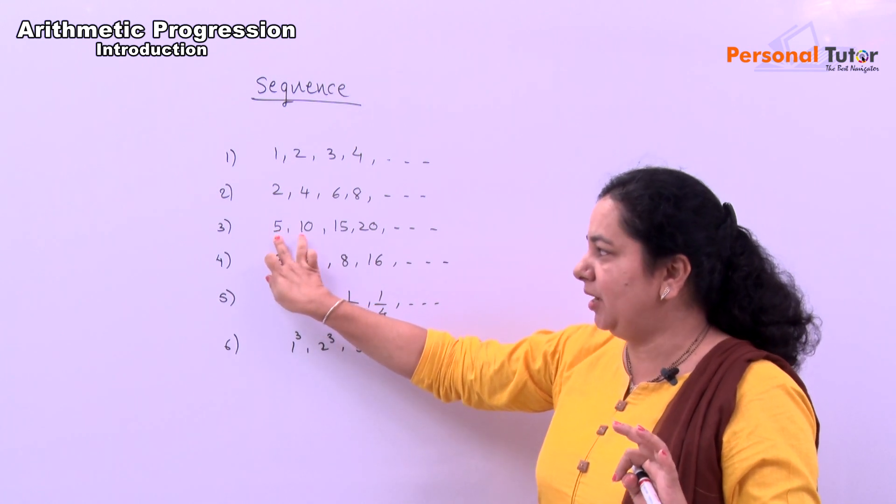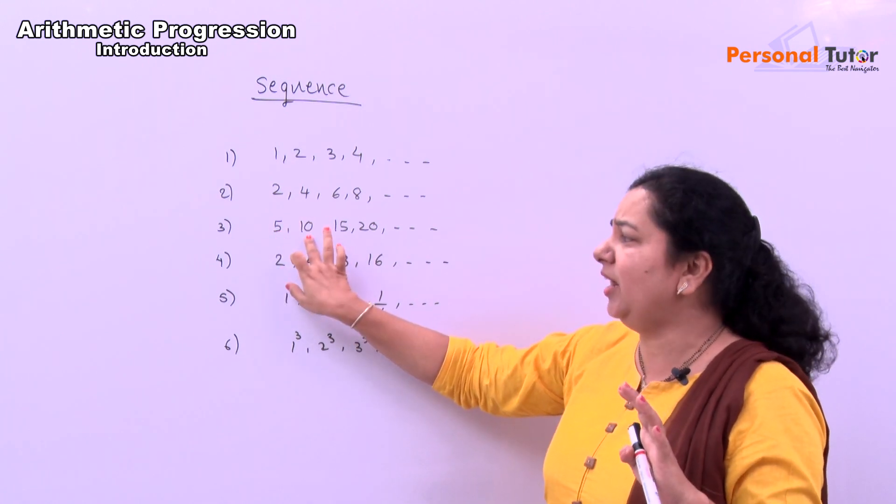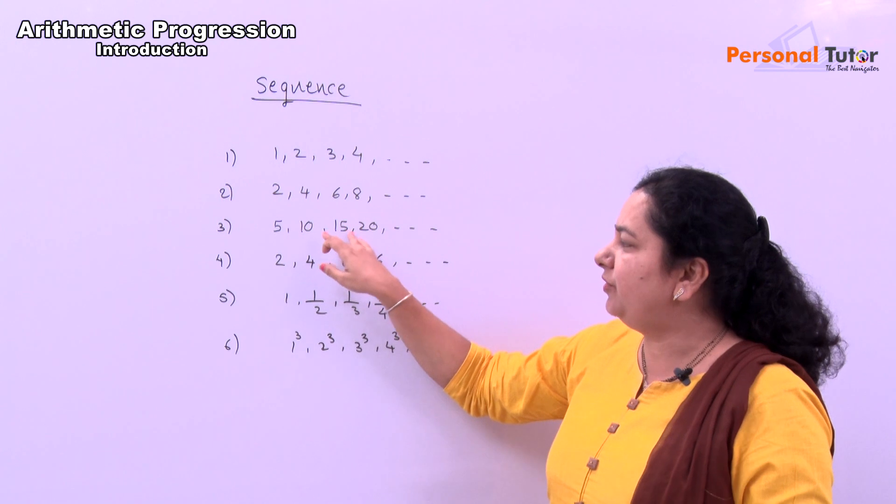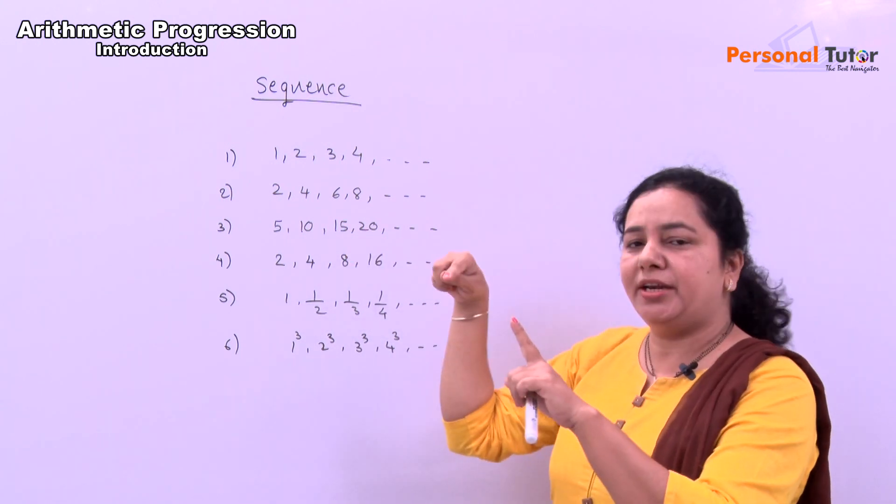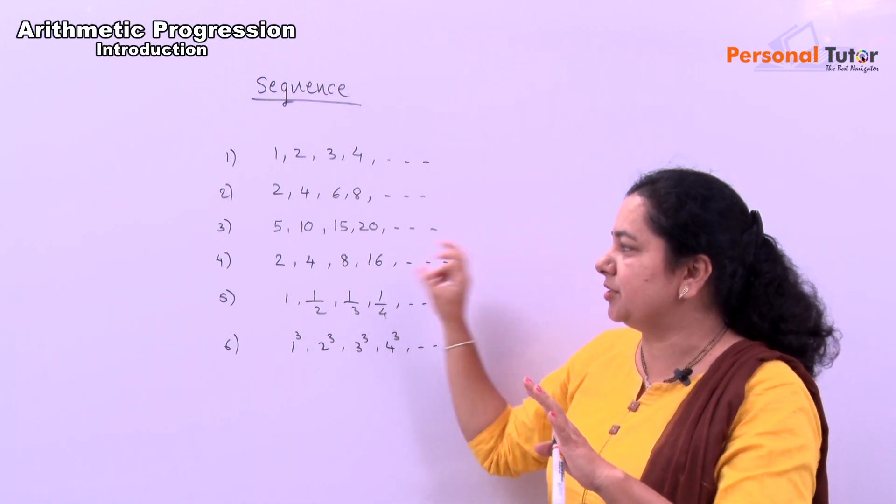In third example, 5 plus 5 is 10. 10 plus 5 is 15. 15 plus 5 is 20. Means next number, while calculating next number, you have to add plus 5, plus 5 like this.